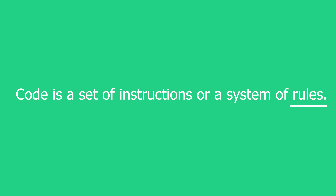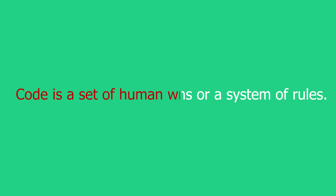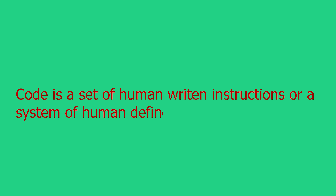Let's begin with a simple question: what is code? Taking a simple definition from the web, code is a set of instructions or a system of rules. That definition feels too mechanical — yes, code is run mechanically, but it's not written mechanically. Even AI-written code is still human thought; they wrote the AI's code. So let's change our definition: code is a set of human-written instructions, or a system of human-defined rules.